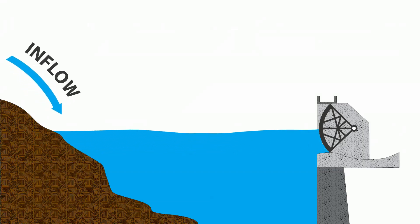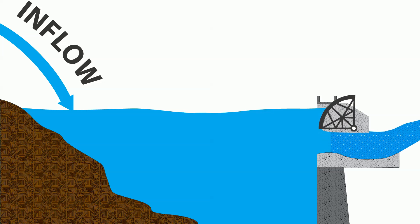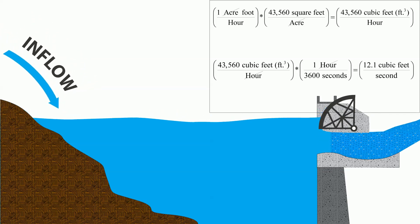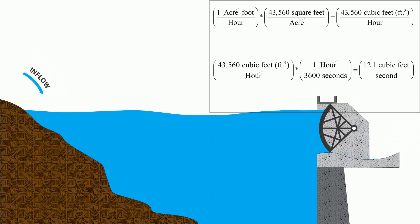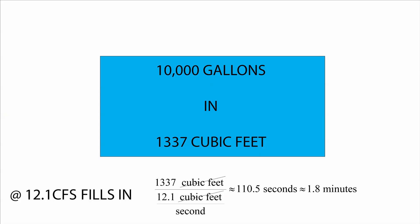This type of conversion will be useful for calculating inflows into a reservoir using volume change in the lake. We will use the conversion factor 1 acre foot per hour equals 12.1 cubic feet per second. A typical backyard swimming pool holds 10,000 gallons in 1337 cubic feet.